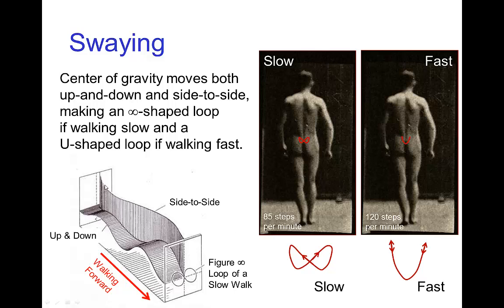As we see in the diagram, there's the up and down motion and side to side motion, and the combination of those two tends to make the center of gravity follow a sideways figure-eight or figure-infinity loop when the character is walking slowly. When the character is walking quickly, the synchronization transitions to more of a swinging U-shaped pattern, almost like a pendulum swinging back and forth in a fast walk.